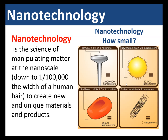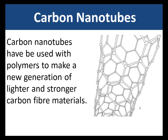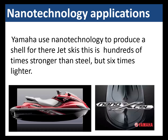Nanotechnology is the science of manipulating matter at the nanoscale — down to 1/100,000th the width of a human hair — to create new and unique materials and products. The head of a pin is one millimeter, which is 1,000,000 nanometers, and it goes down to carbon nanotubes which are just 2 nanometers. Carbon nanotubes have been used with polymers to make a new generation of lighter and stronger carbon fiber materials. Yamaha use nanotechnology to produce a shell for their jet skis that is 100 times stronger than steel but 6 times lighter.